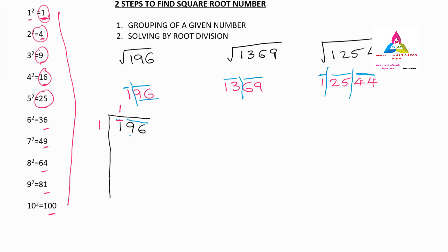So we write 1 here: 1 times 1 is 1, and when we subtract we get 0. Now we bring down 96 — not just 9, but both digits 96. We then add the same number we multiplied: 1 plus 1 is 2. So now we have 2, but it is not just 2 — it is 20 something. From 20 to 29, any number may come in that blank space.